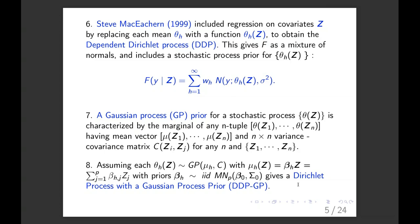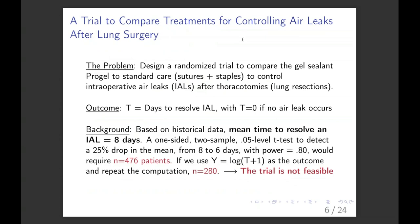Here's the first application. So I'm jumping from a bunch of mathematical symbols to just application. So Reza Mehran, a surgeon at MD Anderson, came to me with a problem that he wanted to design a randomized trial to compare a gel sealant called ProGel to standard of care for controlling intraoperative air leaks after lung resections. And the standard of care is they use sutures and staples. And so having leaky lungs after you've had a resection is a pretty severe problem. It doesn't kill the patient, but it causes them to stay in the hospital and suffer quite a bit.